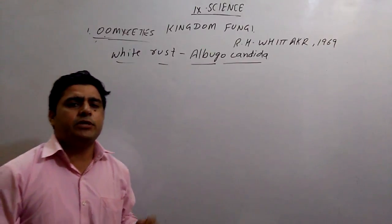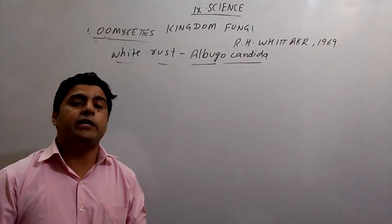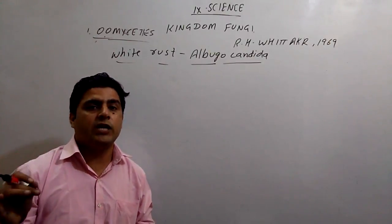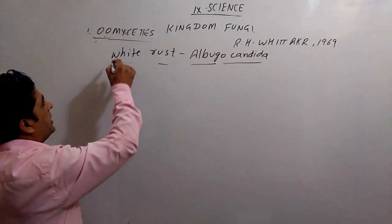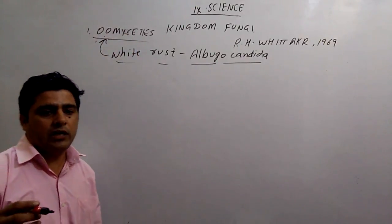It is asked many times in PMT exams: which fungi causes white rust? So, Albugo candida is the fungi, and they are related to the oomycetes. Understood?